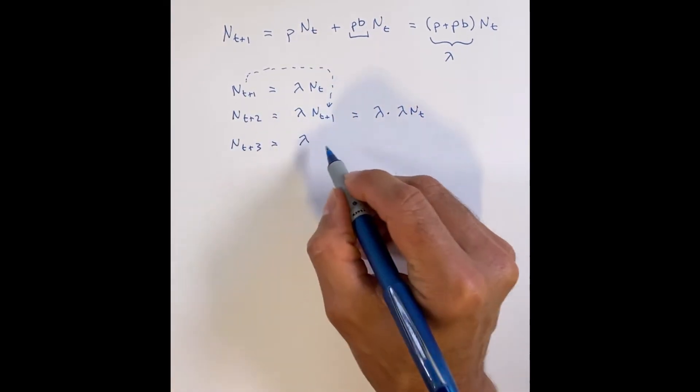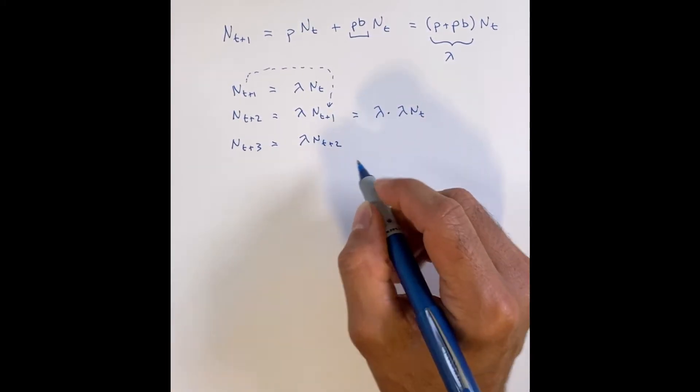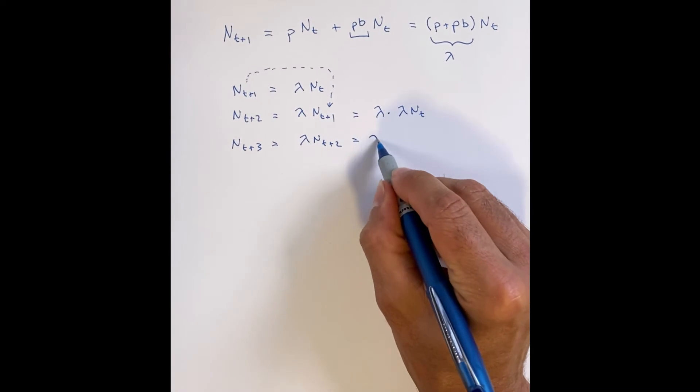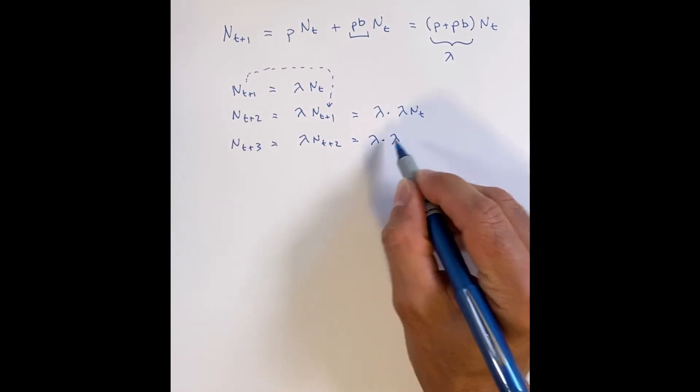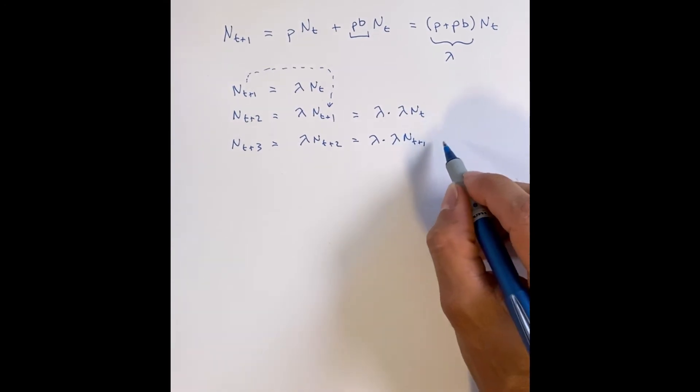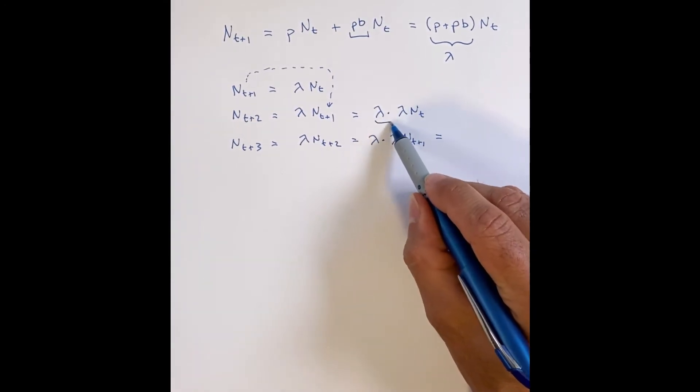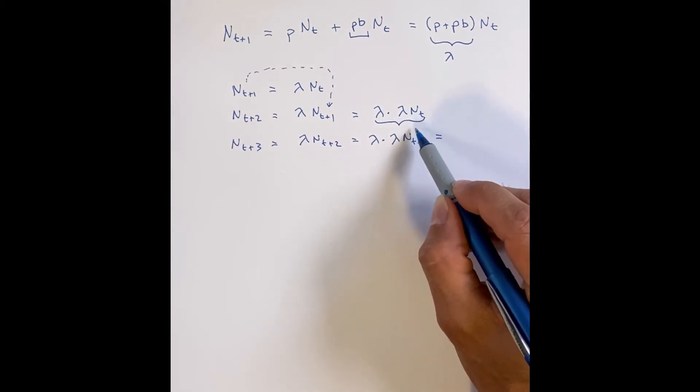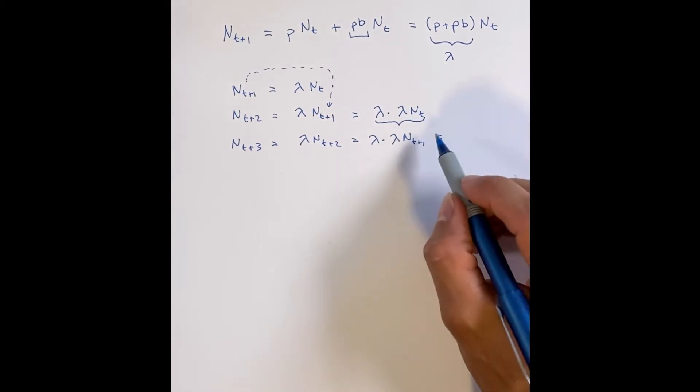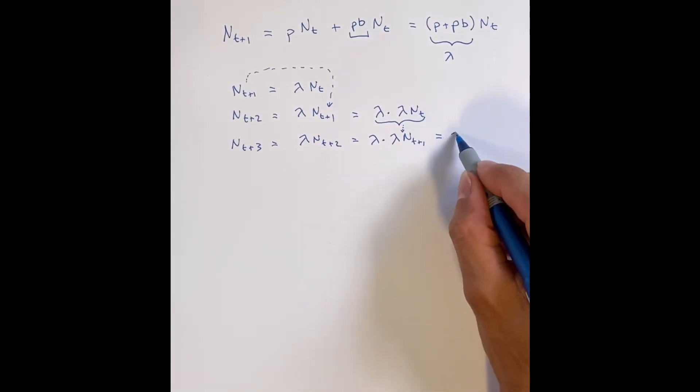And you can do the same exact thing for N at time t plus three. You take the number in the previous generation, N at t plus two, multiply it by lambda. But again, you realize quickly that you know what the previous generation is. It's lambda times N at t plus one, and you know what N at t plus one is. And so it's basically lambda times lambda times lambda times N at t.